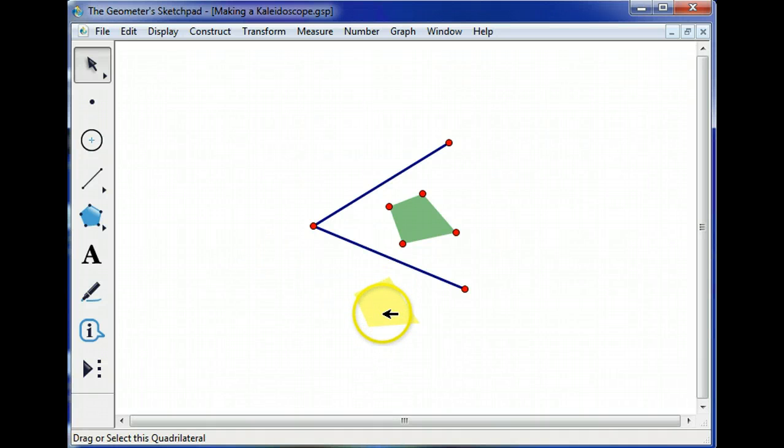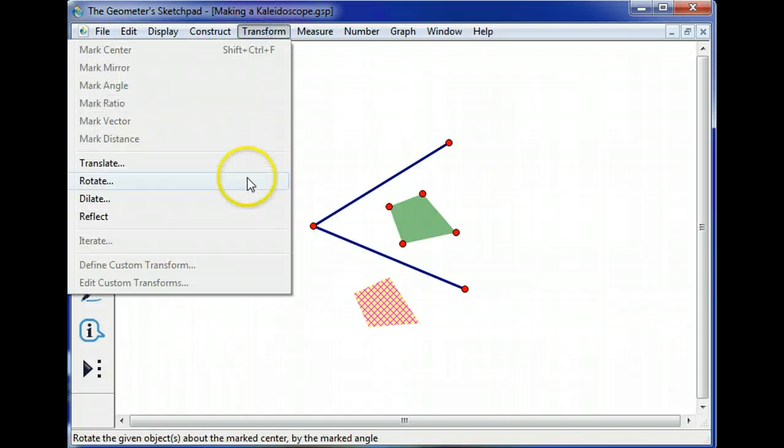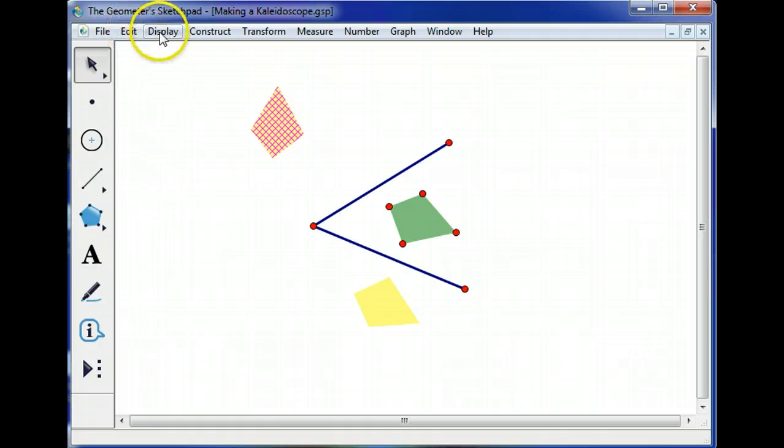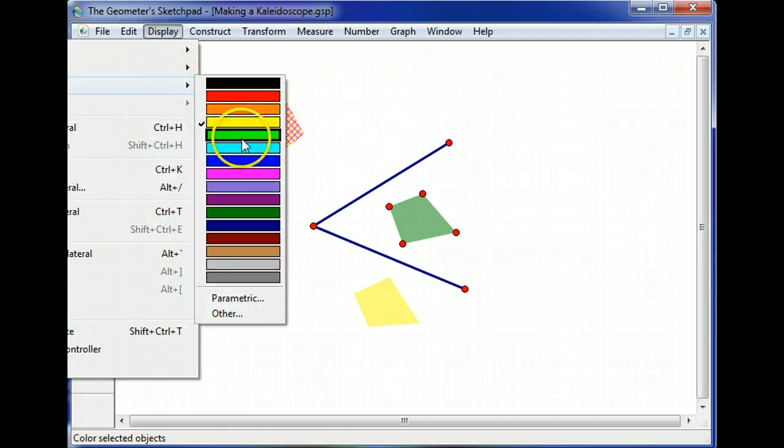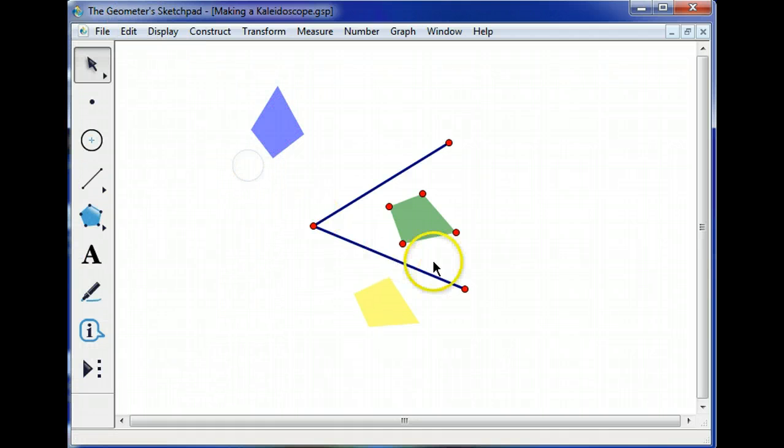Now I'd like to reflect this polygon here over this segment, so I double-click that segment, now that's my mirror, select this polygon, Transform, Reflect, and I'll change that color to blue.